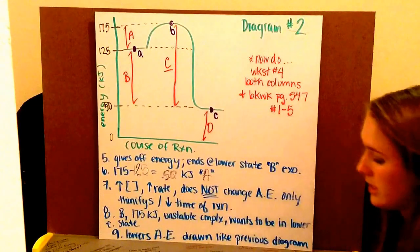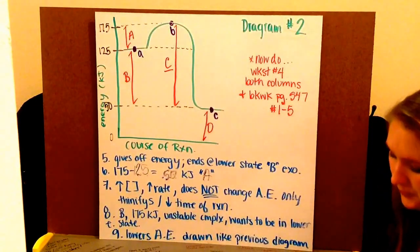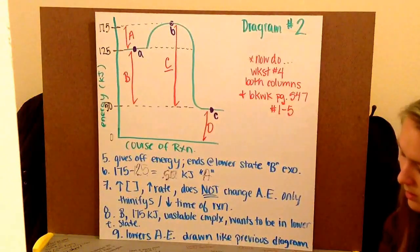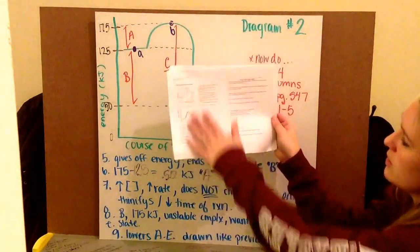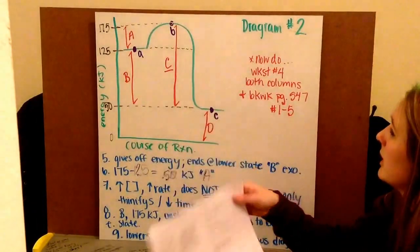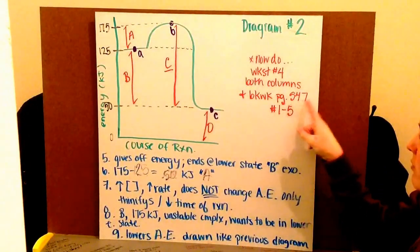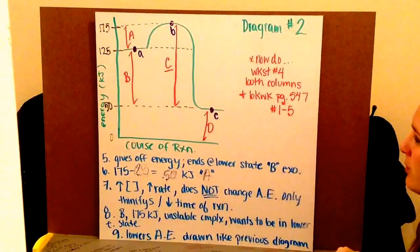Okay? Now you're going to go in your packet and do worksheet number four. The worksheet looks like this. You're going to do both sides. If you finish that before the time is up, you can go ahead and do book work problems, page 547, numbers one through five.